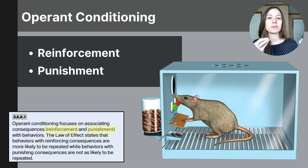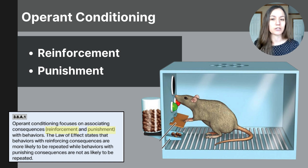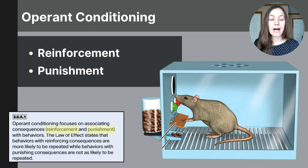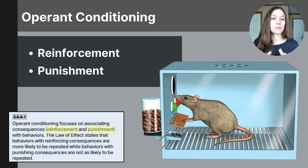The term operant comes from the verb 'operate,' and B.F. Skinner used this word to describe conditioning that happens when the behavior operates on the environment, either reinforcing or punishing it. To explore this, he created what he called the operant chamber — often referred to today as Skinner's box — a controlled experiment where an animal like a pigeon or rat could be conditioned to produce a specific behavior after receiving different types of consequences.